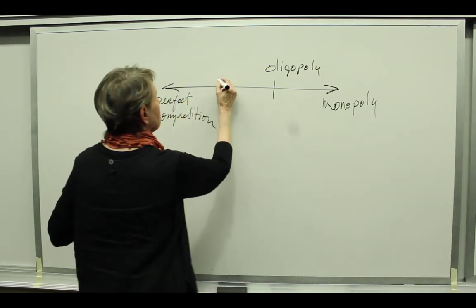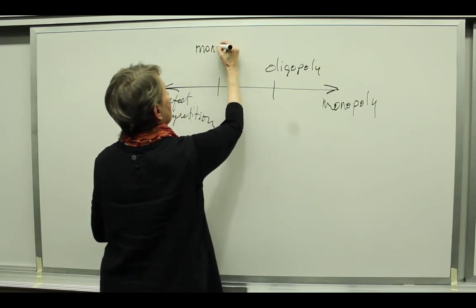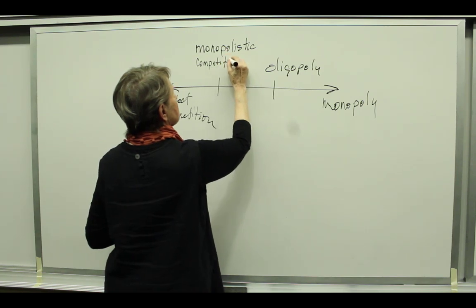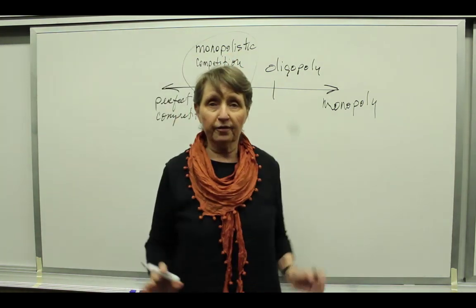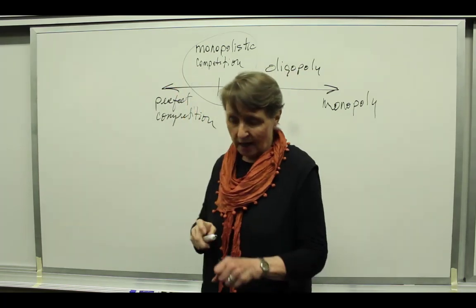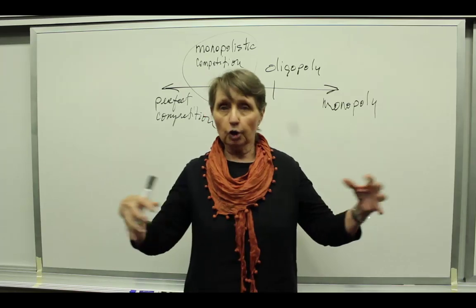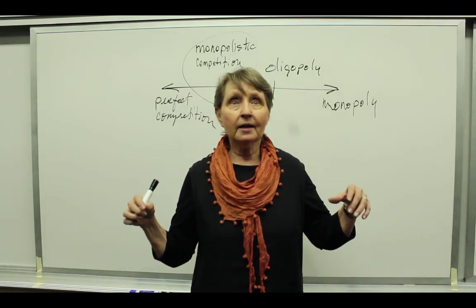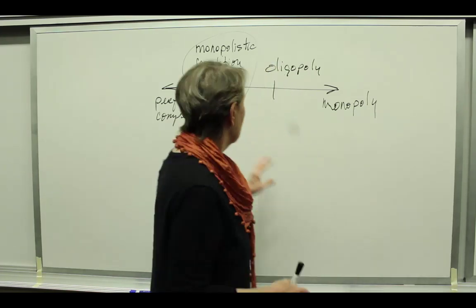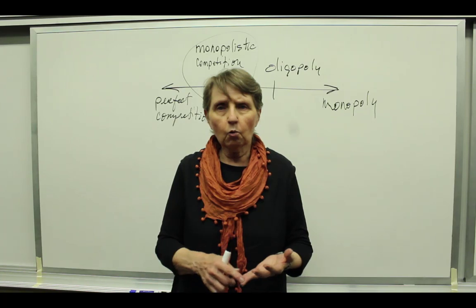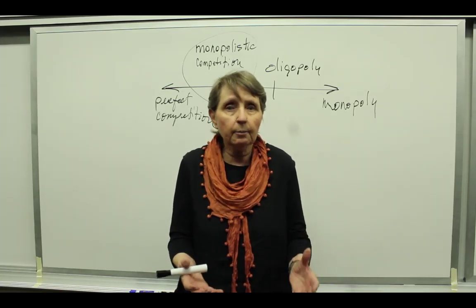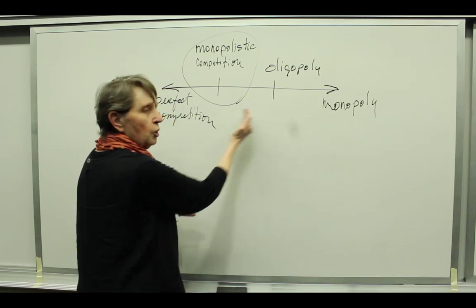Moving further down the continuum, we get to an industry structure called monopolistic competition. Monopolistic competition is where the bulk of economic activity takes place in the U.S. — most of what happens in the U.S. happens under this industry structure. It means there are a lot of small producers and the products are slightly differentiated, but there's a lot of competition. Entry into the industry is relatively easy and the products are different. For example, a Big Mac, a Whopper, a Wendy's, a Carl's Jr. Western bacon burger, even tacos. So we're getting more and more competition as we move this way.